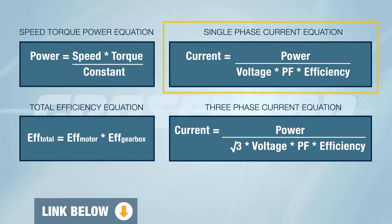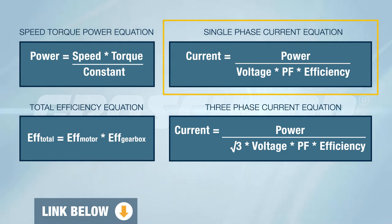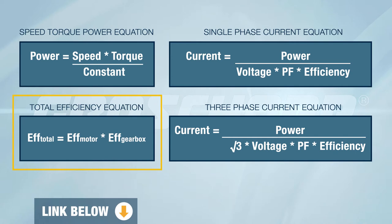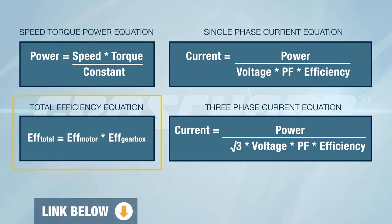Use the second equation to estimate the current that will be needed to meet your application's power requirements. The third equation helps you determine the efficiency of your system. When there's more than one efficiency in a system to consider, you multiply them together to get the total efficiency.